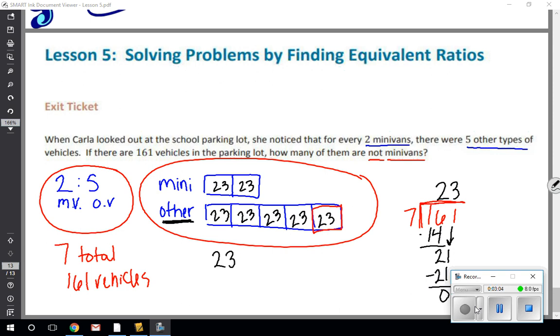So I have 23 times 5. 3 sets of 5 is 15, carry the 1. 2 times 5 is 10 plus 1 more is 115. So we have a total of 115 other vehicles that are not minivans and there's the answer to my question.